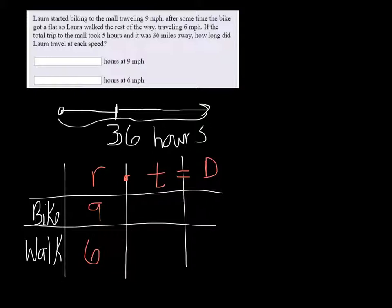We don't know how long she biked, but we know the total time was five hours. So if we take how long it took her to bike, however many hours that was, and subtract that from five we get how long it took her to walk.